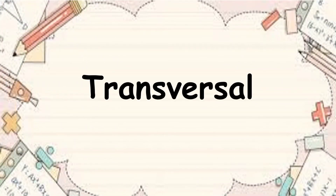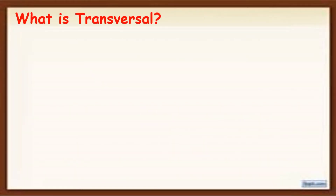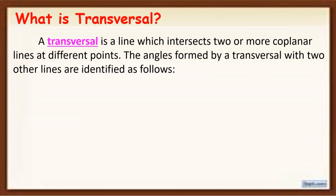Hello everyone. In this video, I'm going to discuss about transversals. A transversal is a line which intersects two or more coplanar lines at different points. The angles formed by a transversal with two other lines are identified as follows.